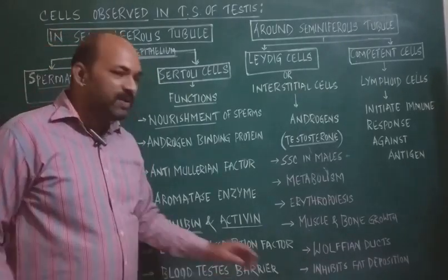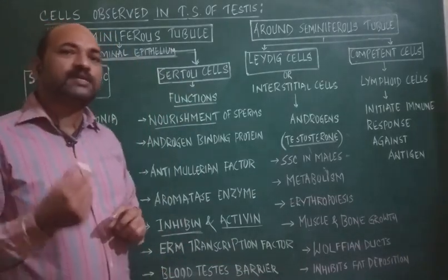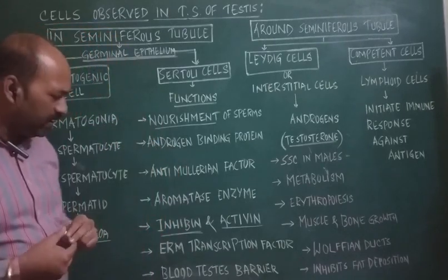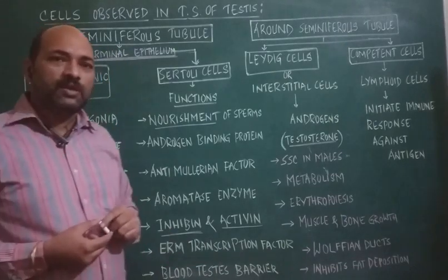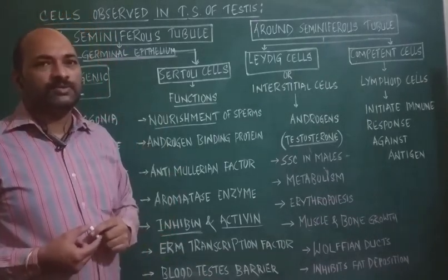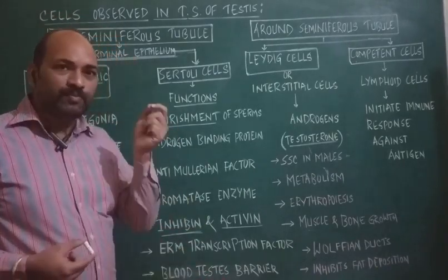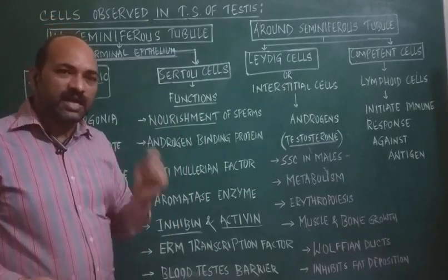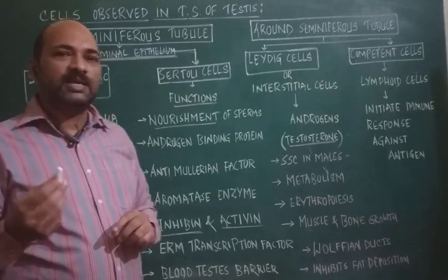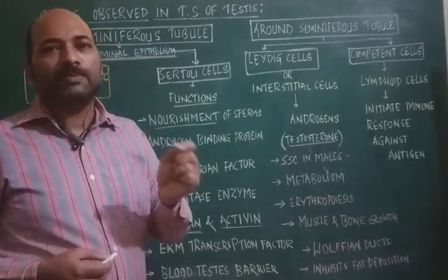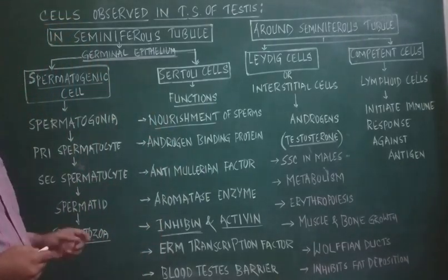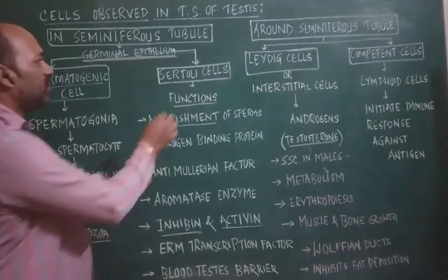Sertoli cells also act as a blood-testis barrier, which provides an adluminal environment to the stem cells. The blood-testis barrier avoids production of anti-sperm antibodies and autoimmune responses, which may result in sterility in males. Additionally, Sertoli cells secrete transferrin, a glycoprotein or blood plasma protein that delivers iron ions to spermatogenic cells for the spermatogenesis process.